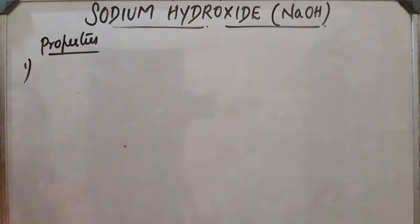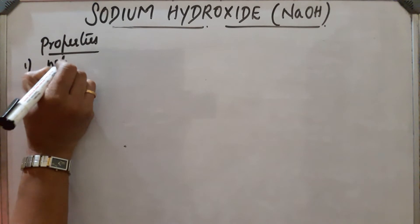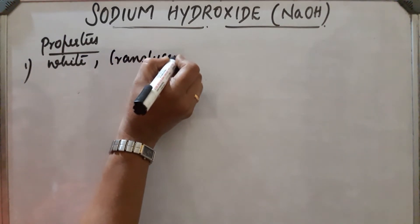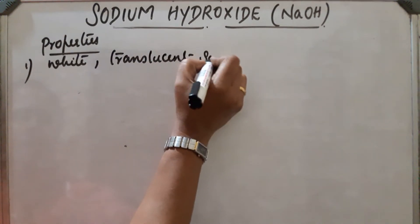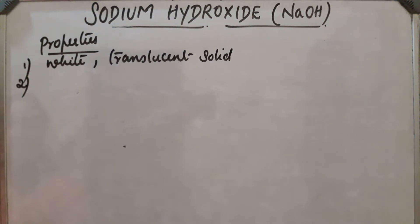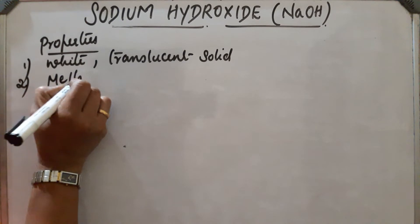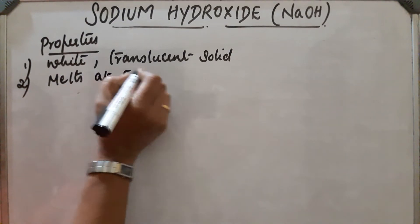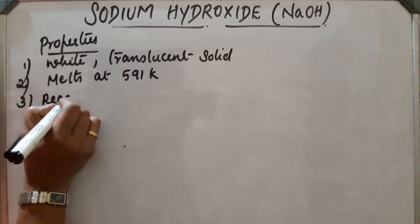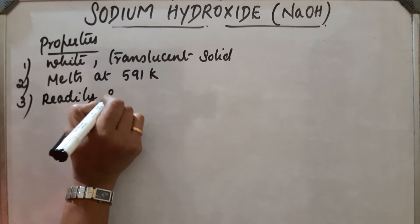Properties of sodium hydroxide: First, NaOH is a white translucent solid — translucent means it is semi-transparent. Second, sodium hydroxide melts at 591 Kelvin. Third, it is readily soluble in water.